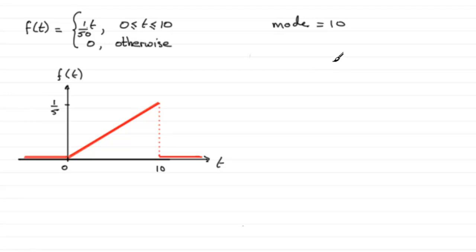Now for the next part, we're told it's suggested that the probability density function f of T is not a good model for the random variable T. T, remember, is the length of a telephone call made to a company. And we've got a sketch, then, a graph of a more suitable probability density function for T.